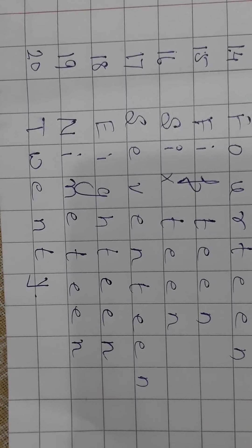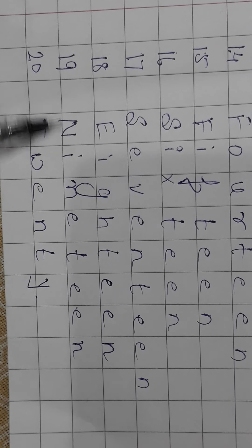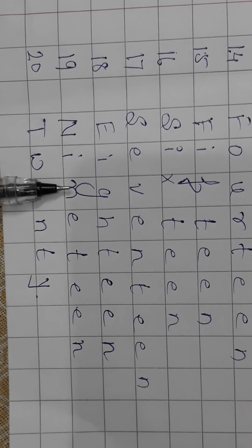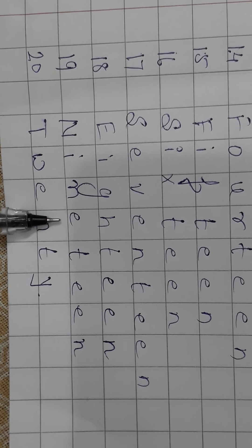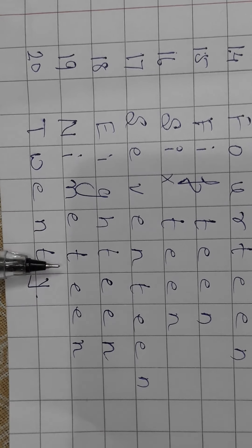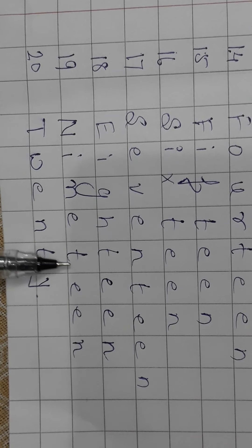Now let's move on to the last one. 19 — N, I, N, E, T, W, E, N. 19.